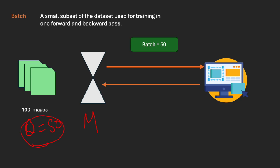I have a dataset of 100 images and in my model I have coded that one batch in training should be of 50 images only. So if I have to cover all the images, how many batches do we need to send? We need to send two batches. This ML model is sending 50 images — this is one batch.